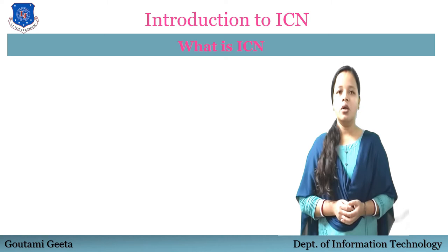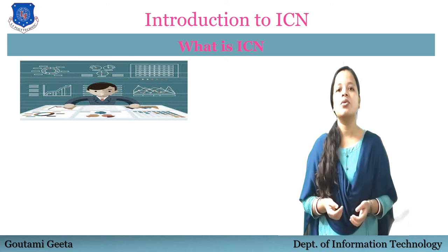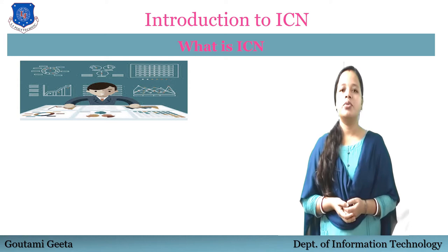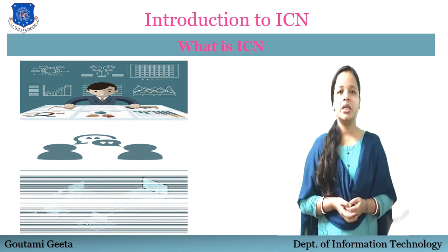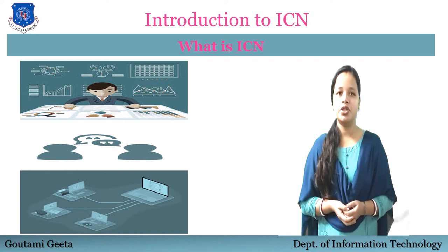I think you all know what information is and what the benefits of it are. Information is a set of processed data which is obviously meaningful. It may be in any format like graphs, charts, pictures, or plain text, as shown in the video. Communication means exchange of information between at least two devices or two persons. And network means a collection of owned devices for the purpose of communication of information or data.